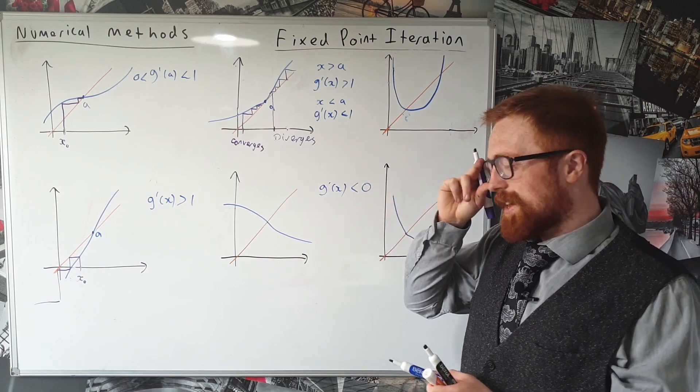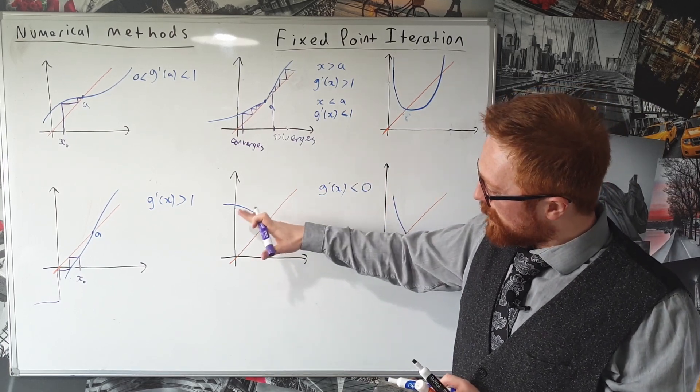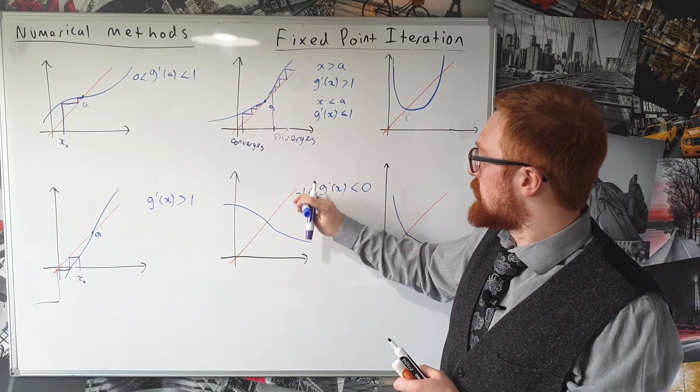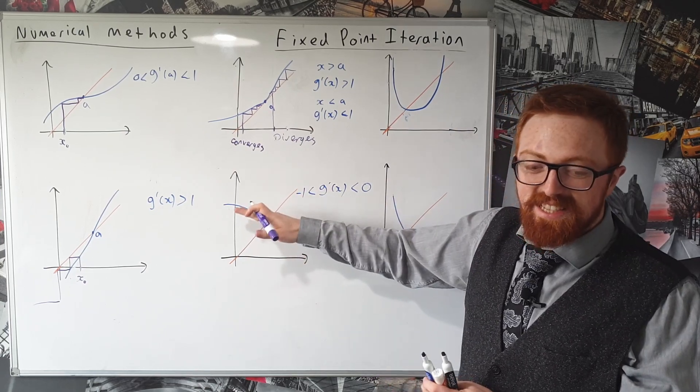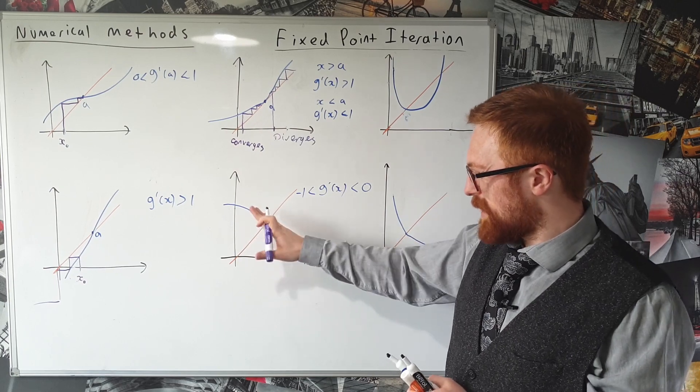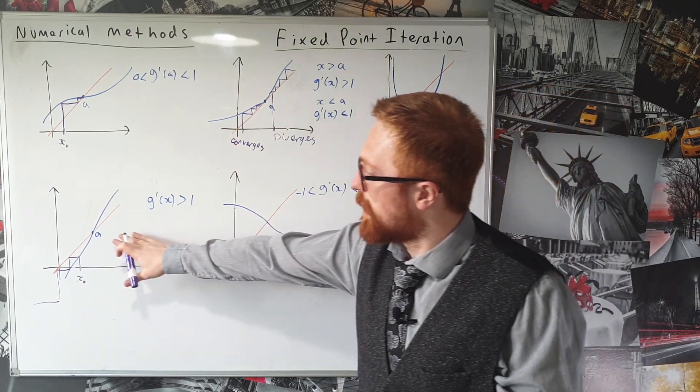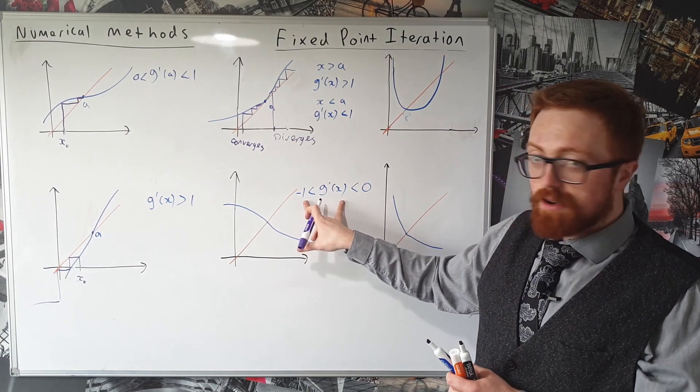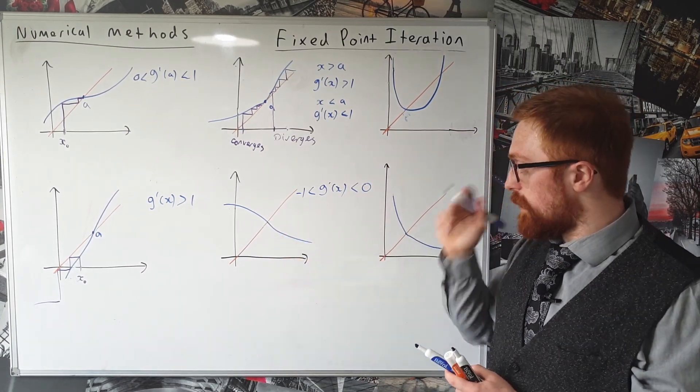Now it's a bit weird to think about the gradient being bigger, but it's greater than negative one, which means it's less steep than if the gradient were a negative one. So it's a little bit backwards to think about it compared to these ones, but because it's between negative one and zero, this one should converge.